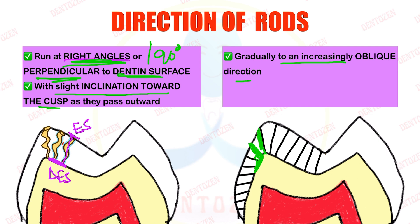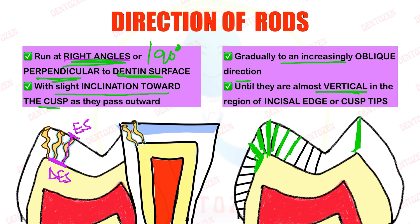These enamel rods reach the outer surface, and in the region of the cusp tips they become almost vertical. So they are almost vertical in the region of incisal edges in anterior teeth and cusp tips in molars and premolars. In summary: they start at the DEJ at right angles and end at the enamel surface, becoming vertical at incisal edges and cusp tips.